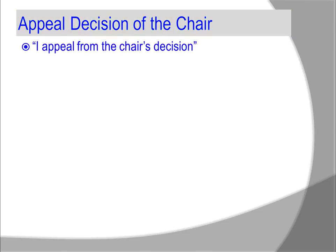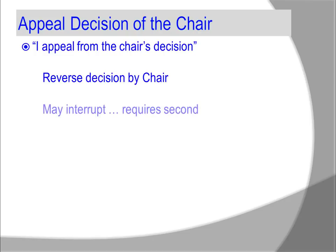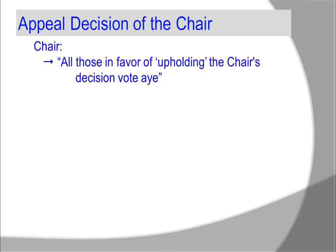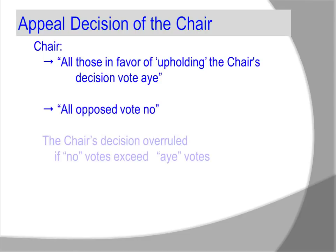How about appealing the decision of the chair? 'I appeal from the chair's decision.' This can reverse a decision by the chair. This motion may interrupt, but it does require a second. It is debatable if the pending motion is debatable. The chair states 'All those in favor of upholding the chair's decision vote aye; all opposed vote no.' The chair's decision is overruled if no votes exceed aye votes.